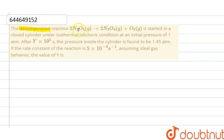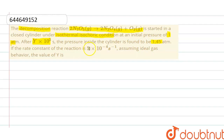The decomposition reaction is started in a closed cylinder under isothermal, isochoric conditions at an initial pressure of 1 atmospheric. After y into 10 raised to the power 3 seconds, the pressure inside the cylinder is found to be 1.45 atmospheric. The rate constant of the reaction is 5 into 10 raised to the power minus 4. Assuming ideal gas behavior, the value of y is what we have to find out — that is, the time.